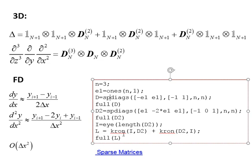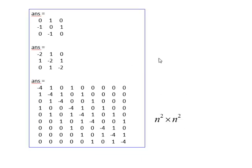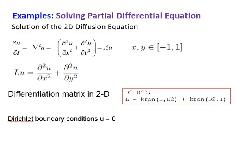Using the kron command we can express the Laplacian operator as L = kron(I, D2) where D2 is the second derivative matrix. The first derivative matrix and second derivative matrix have their respective sparse forms, and the Laplacian is obtained in just two lines of code. Since we used a 3 by 3 example, this gives a 9 by 9 matrix (N² by N²).